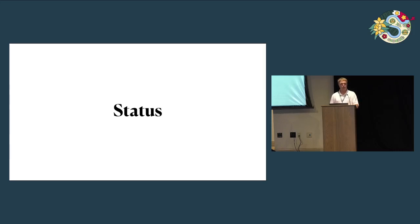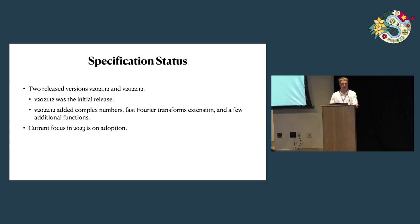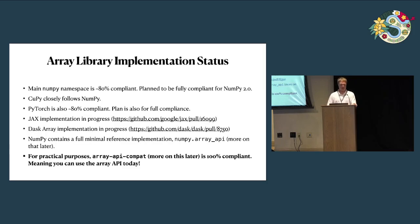So what's the status of all this work? There have been two versions released of the specification. The 2021 version was the initial release, and in 2022 we released the second version, which added support for complex number dtypes, the FFT extension, and a few additional functions. In 2023, our focus has been on adoption — getting libraries to support the API, both array libraries and array-consuming libraries. NumPy, CuPy, and PyTorch are all at about 80% compliant, but the plan is for full compliance. NumPy 2.0 in particular is planned to be fully compliant, which may require a few small backwards-incompatible changes. PyTorch also plans to be fully compliant.